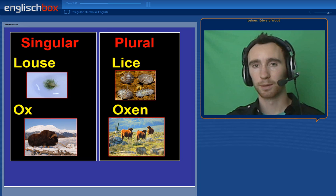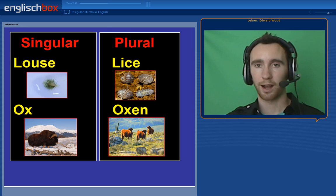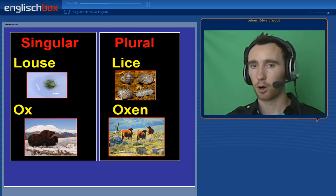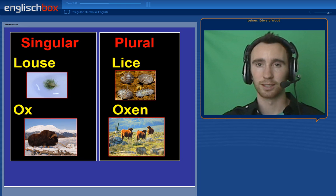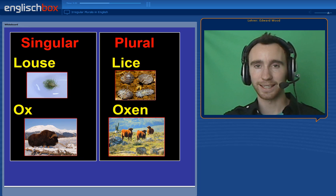Following a similar rule to child and children, we can also have ox and oxen, adding '-en' in the plural.